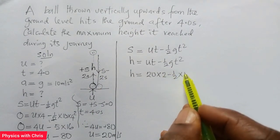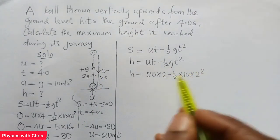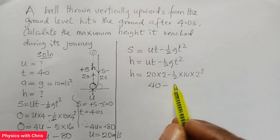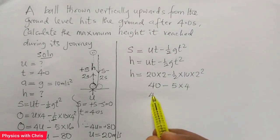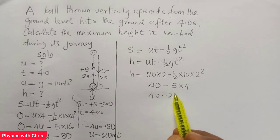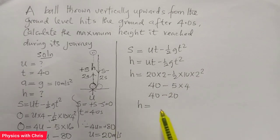H equals 20 times 2 minus half times 10 times 2 squared. This gives me 40 minus 5 times 4, which gives me 40 minus 20. So the maximum height raised by this ball in the absence of air resistance is 20 meters.